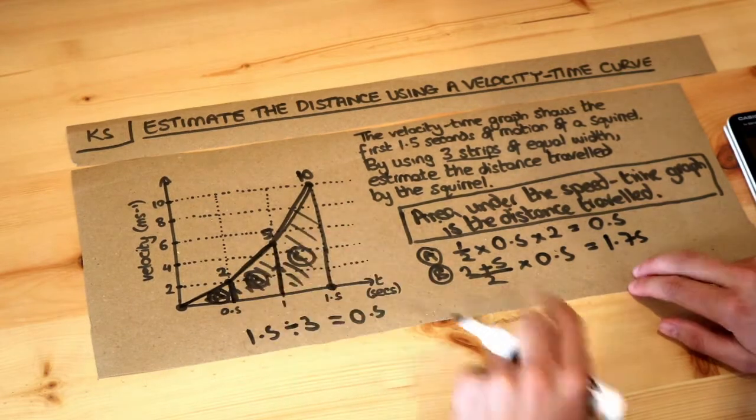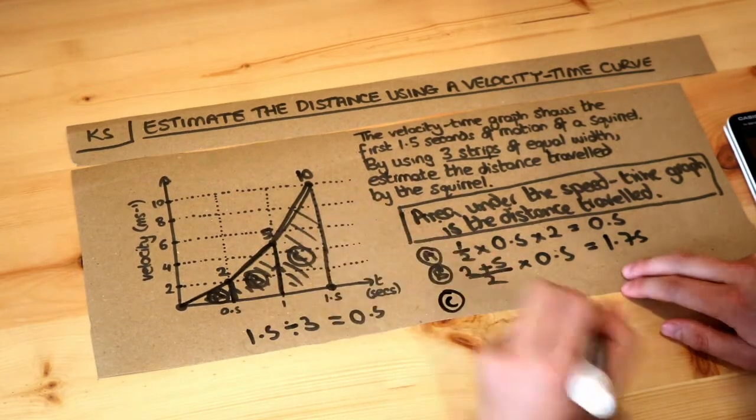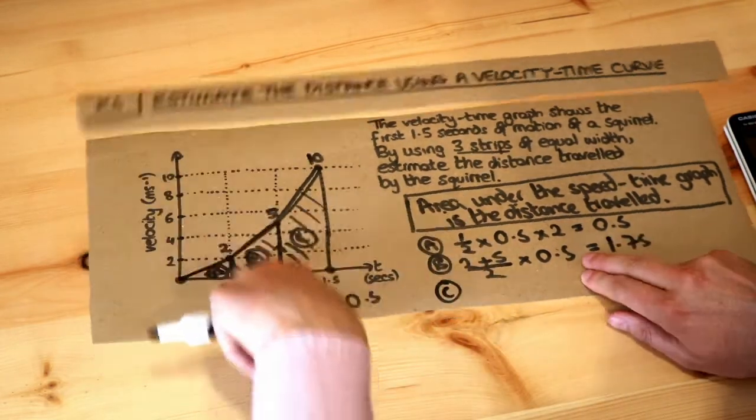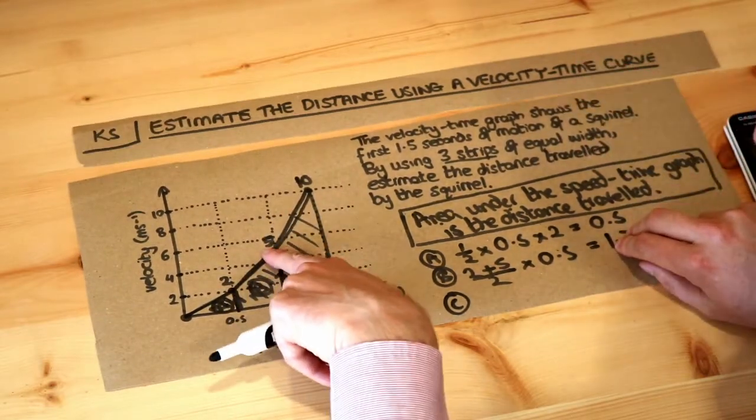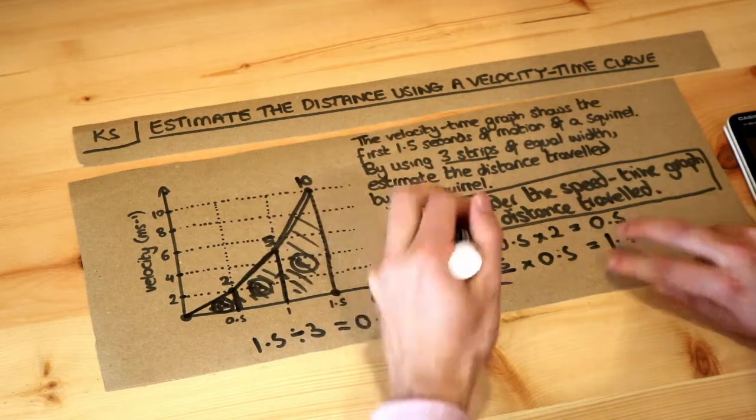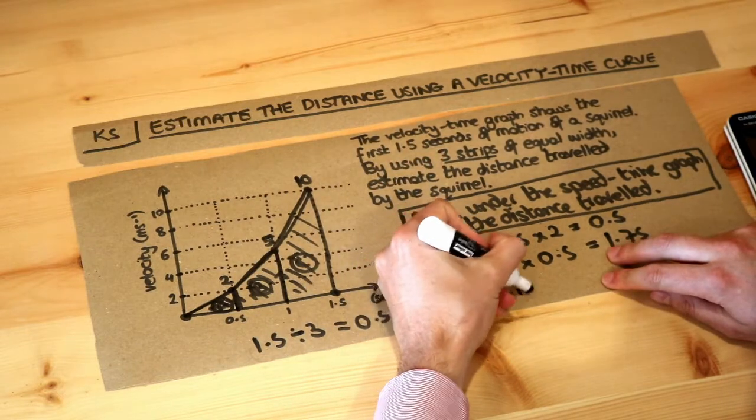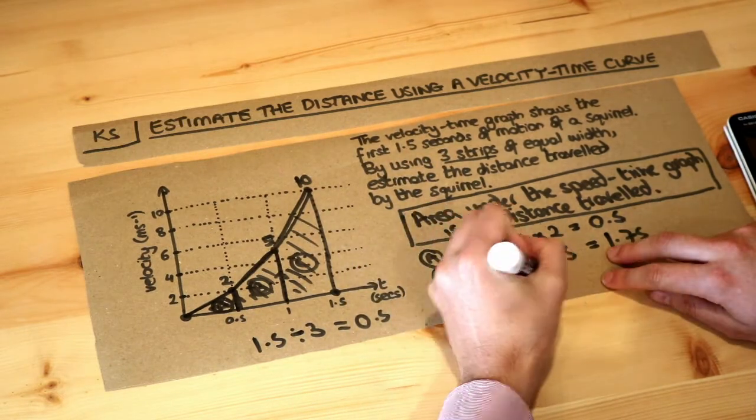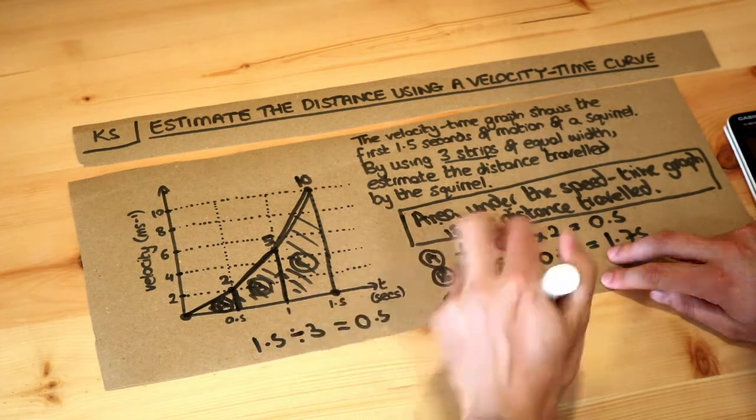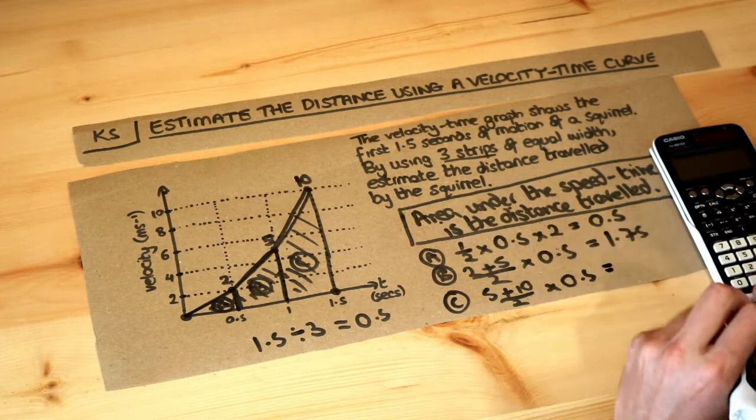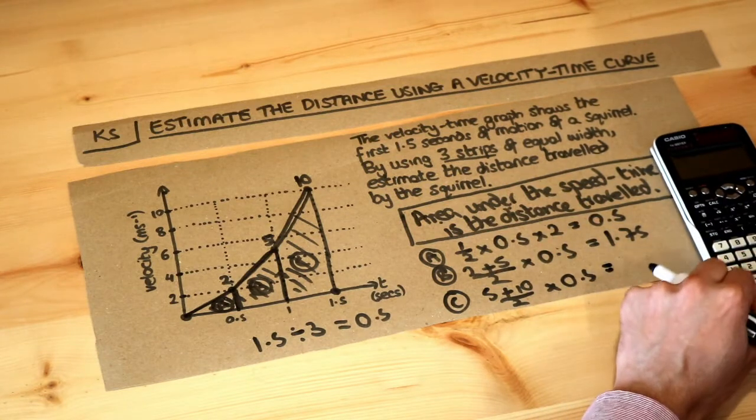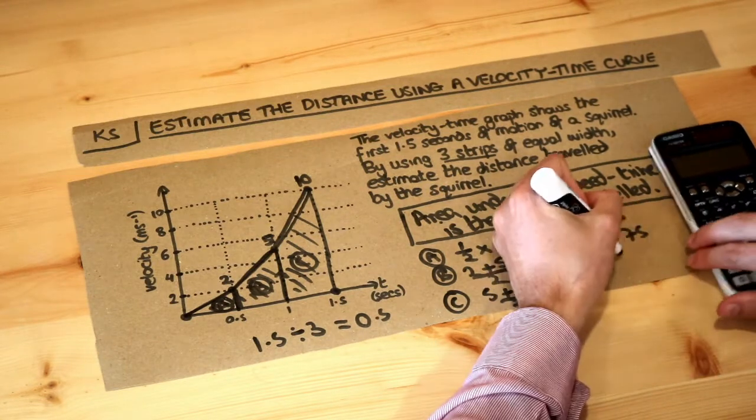And finally we've got this trapezium on the right. Again, we just do the average of the parallel sides—well these are the parallel sides, and we can see those lengths are 5, which we wrote on, and 10. So we do 5 plus 10 divided by 2 to average them. And then we times it by the distance between them, which is 0.5. Again, that's the width of this strip. We put that into our calculator, so 7.5 times 0.5 is 3.75.